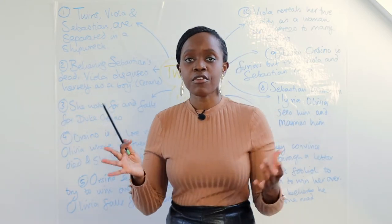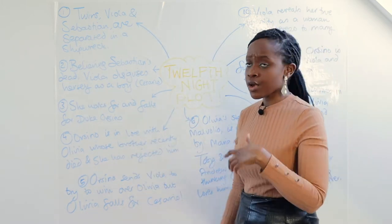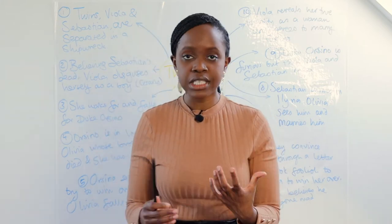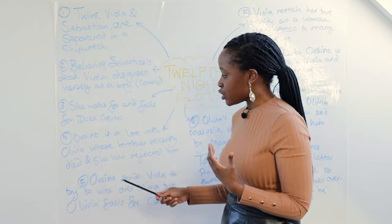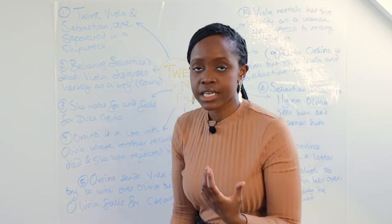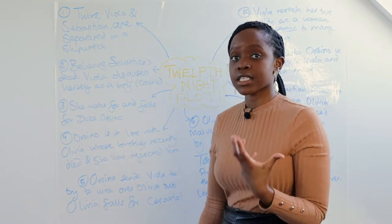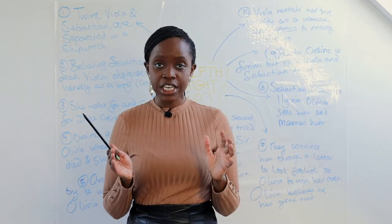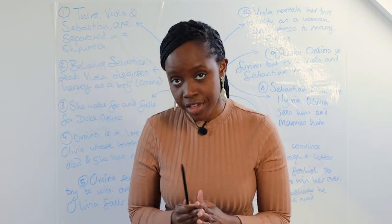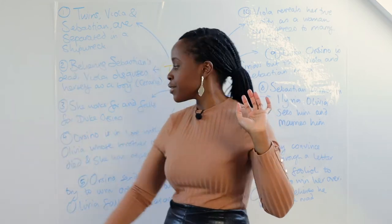Duke Orsino quickly starts trusting Cesario. We learn that Orsino is in love with a noblewoman in Illyria called Olivia. He has tried to woo her and get her to marry him, but she has rejected him. The main reason is that her brother has died and she has decided to reject all male suitors for seven years.